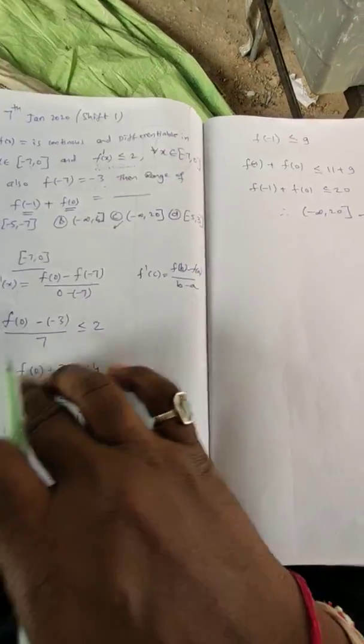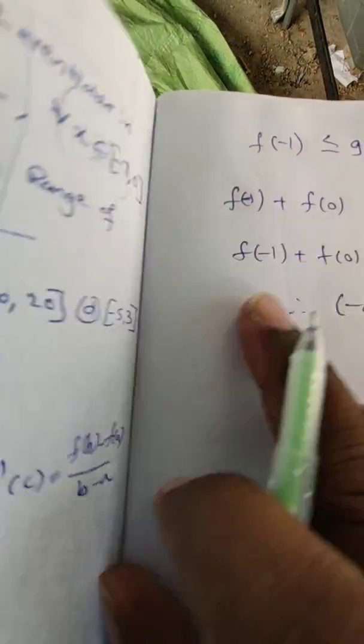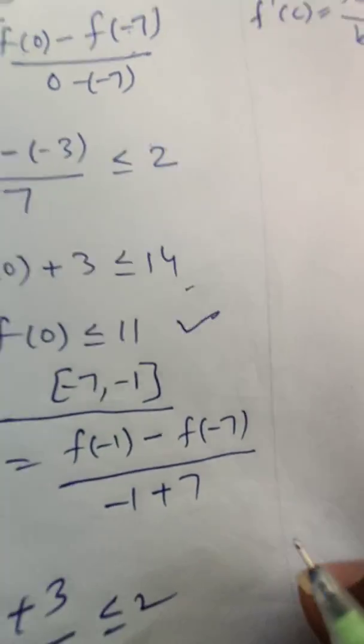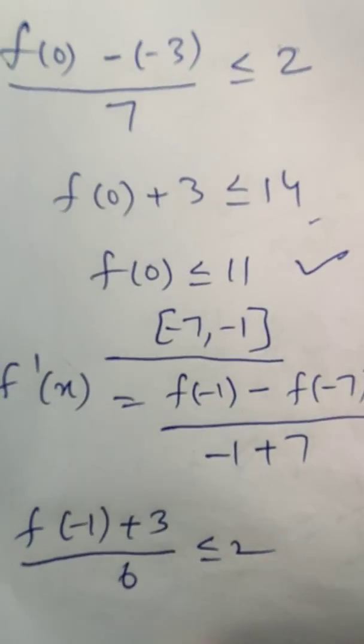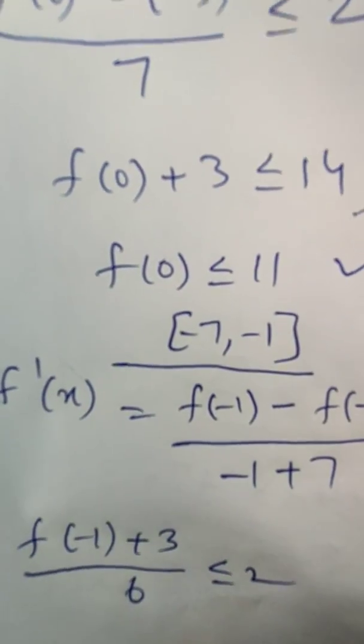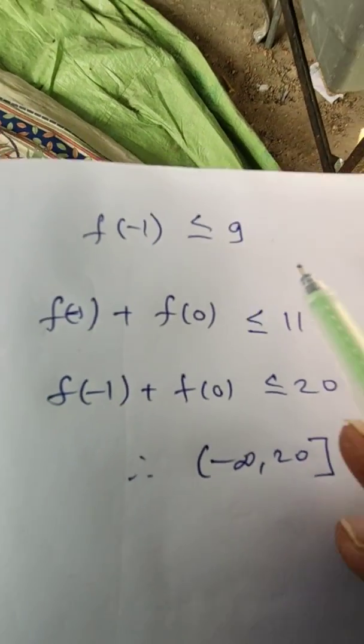So multiplying by 6 gives 12, so 12 - 3 = 9. So f(-1) ≤ 9. You have any doubts here in this way? Just look at here: 6 to 12 and sending +3 to the other side, 12 - 3 is 9. So f(-1) ≤ 9.